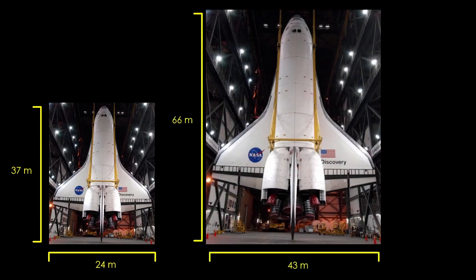The V-1 orbiter is 37 meters long and has a wingspan of 24 meters. If we scale it up to hold all the propellant for our reusable version, we end up with a truly huge 66 meter orbiter with a 43 meter wingspan.